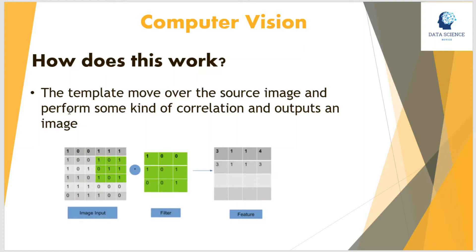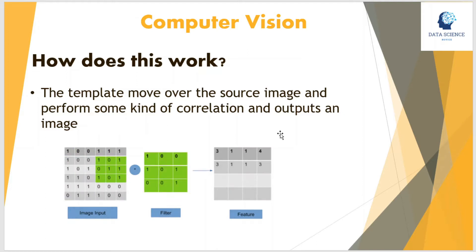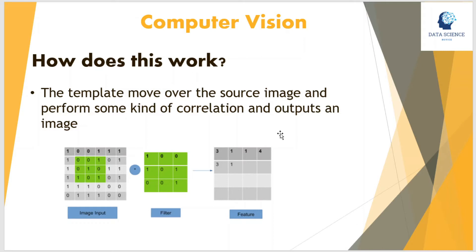So let's see how template matching works. As we know, an image consists of pixels and each pixel has a value between 0 to 255. The template moves over the source image and does some kind of correlation. There are different ways to calculate these correlations. Wherever the pixel value is similar, that area will have the highest or lowest value depending upon the type of algorithm we are using.